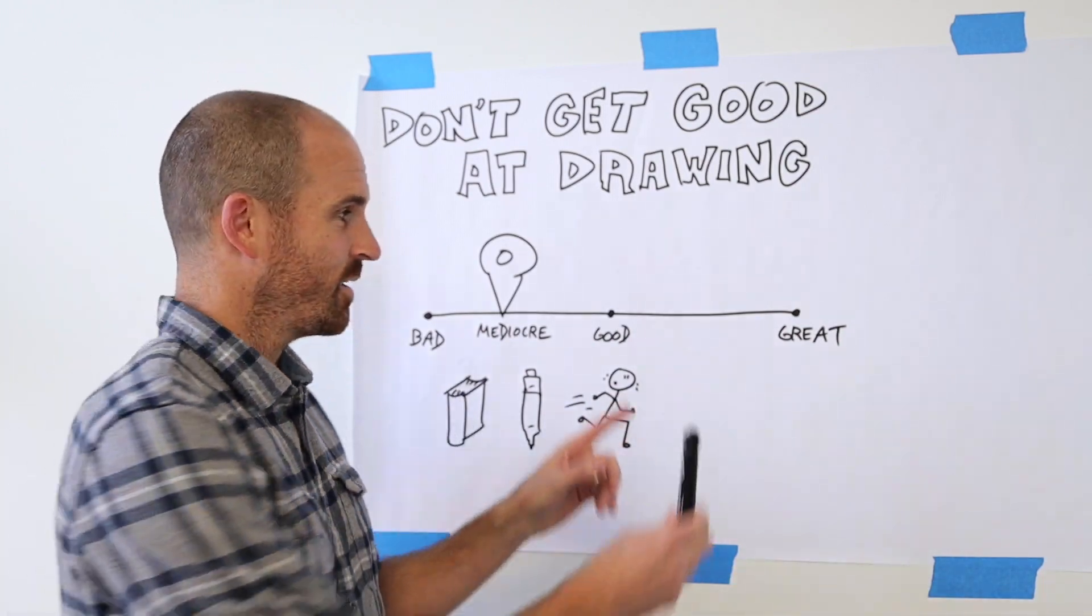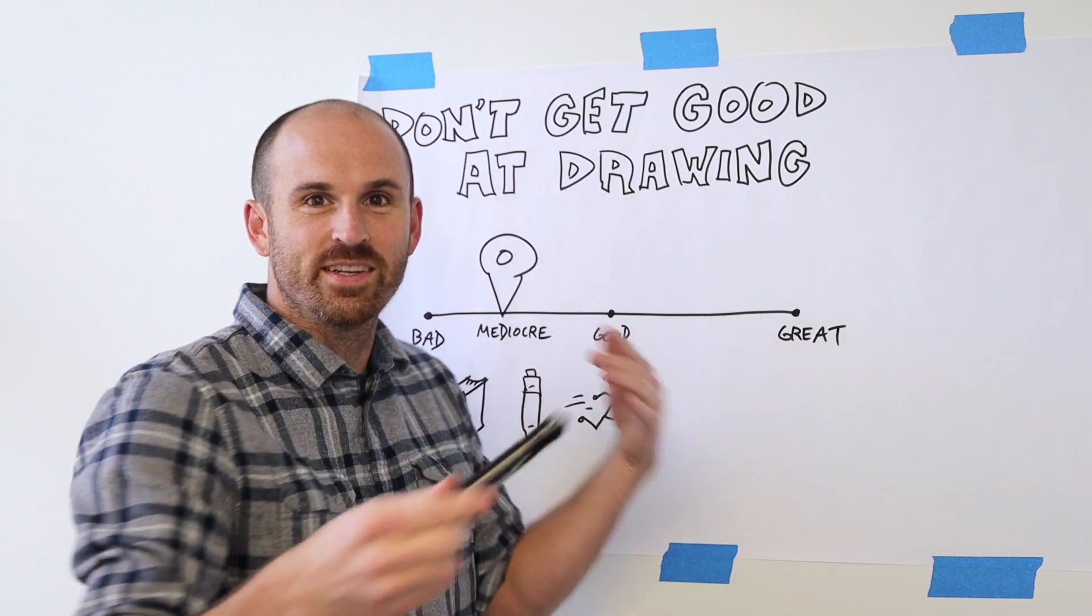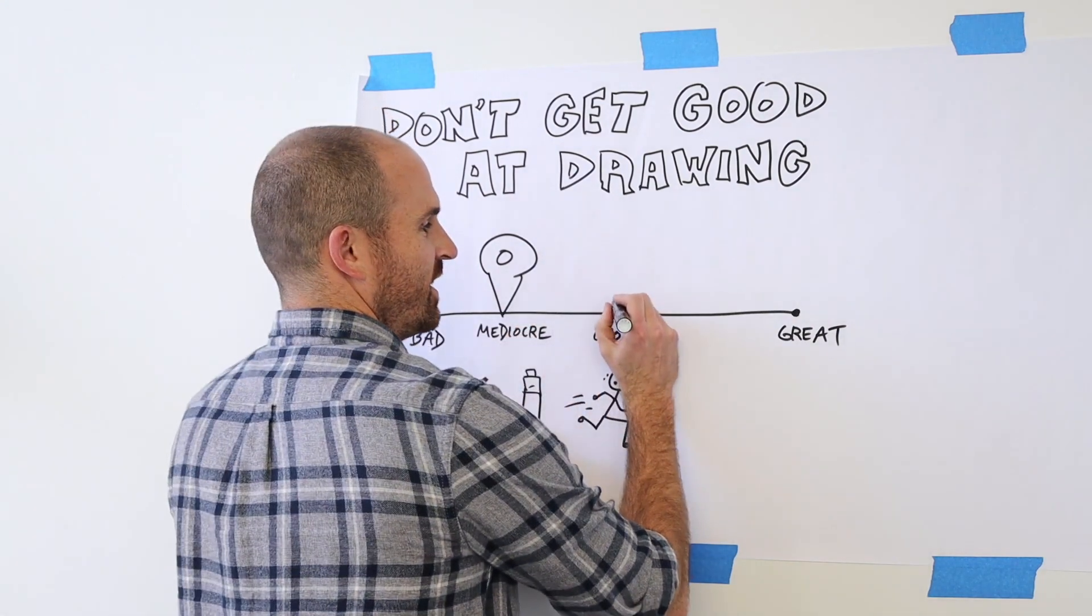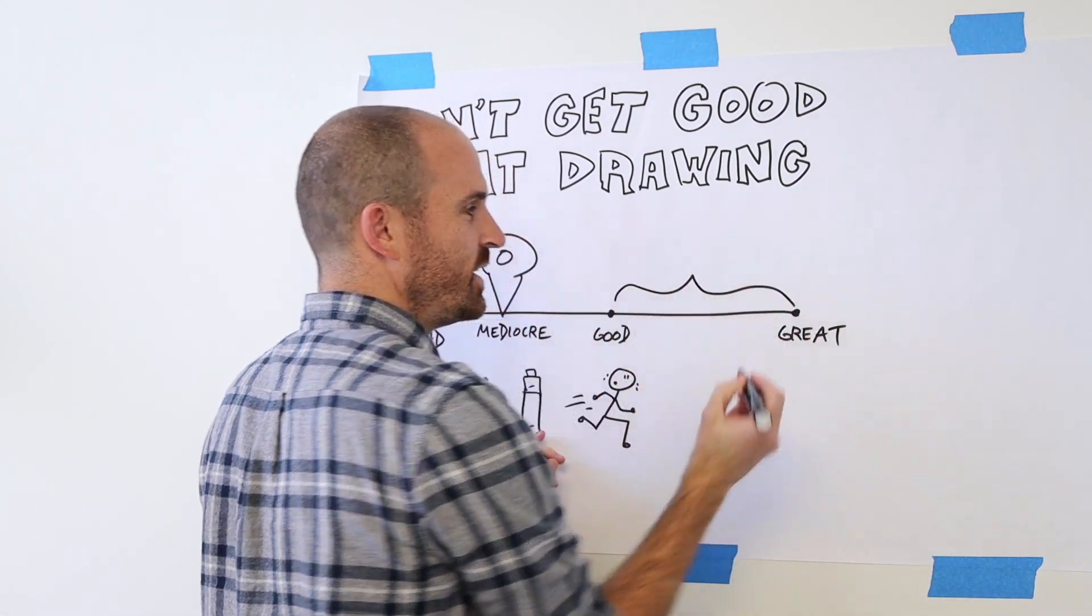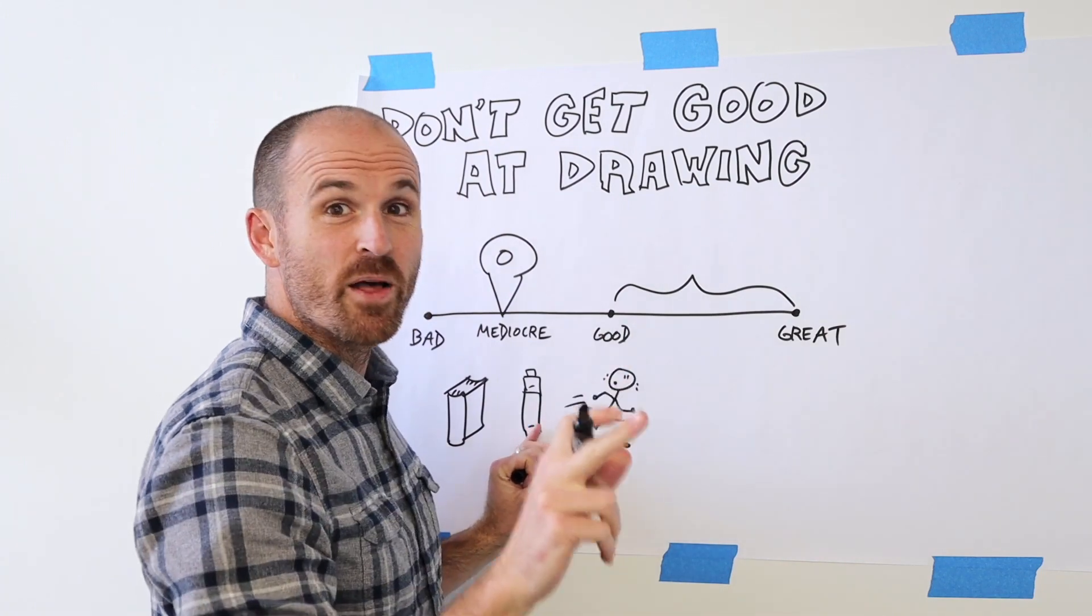And here's why I think this part of this spectrum can be a little bit of a dangerous place. It's a little bit too easy to care about the wrong thing.